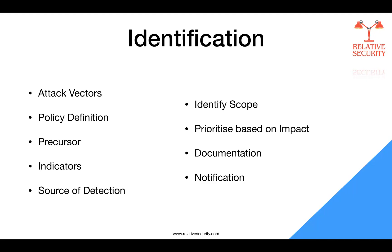There are two key terminologies: precursors and indicators. Precursors are events that are not part of the incident per se, but are early signs that something different — something not normal — is happening or will happen within the organization. Indicators, on the other hand, tell you that an incident is currently in progress — that the system has been compromised and the attacker is currently on the system performing their actions.